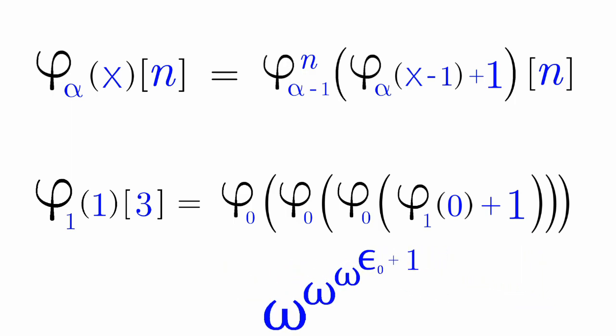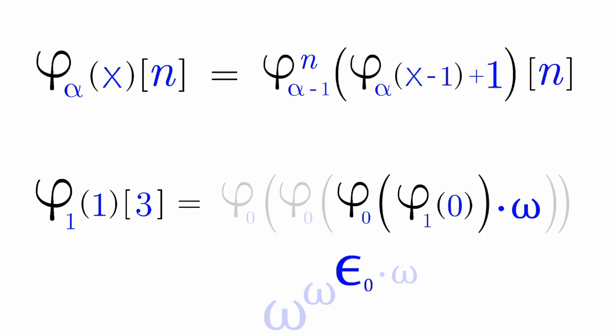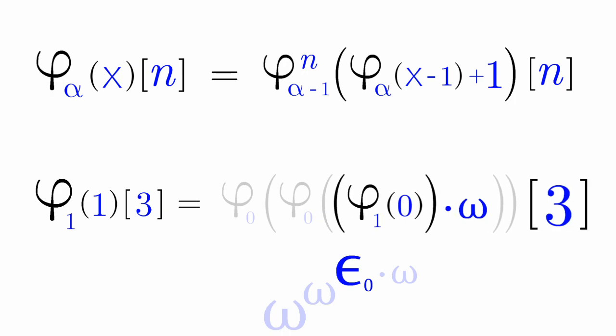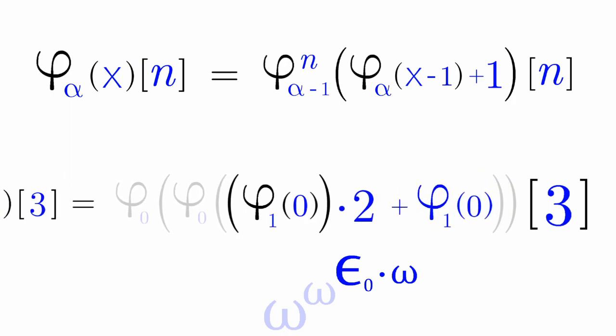And as we've known in our previous video, this turns into Omega to the Epsilon 0 times Omega. So Phi 0 Phi 1 0 plus 1 turns into Phi 0 Phi 1 0 times Omega. Omega to the Epsilon 0 collapses into just Epsilon 0. So Phi 0 Phi 1 collapses into just Phi 1. So that's Phi 1 0 times Omega. Omega diagonalizes into a 3. So Phi 1 0 times 3 breaks down to Phi 1 0 times 2 plus Phi 1 0. I'll just halt right here.